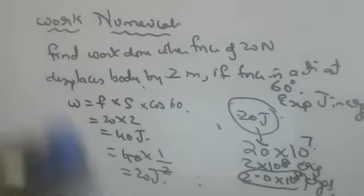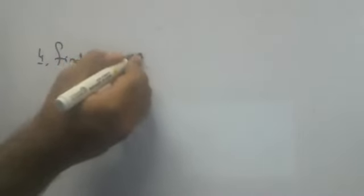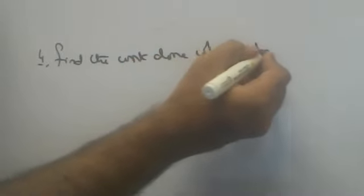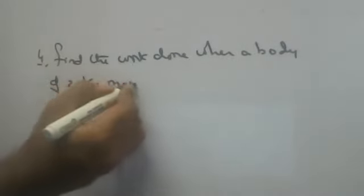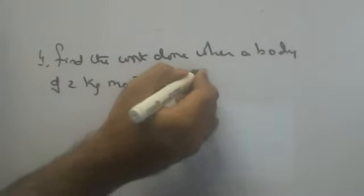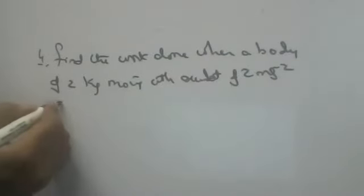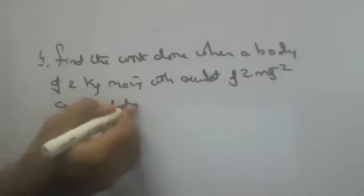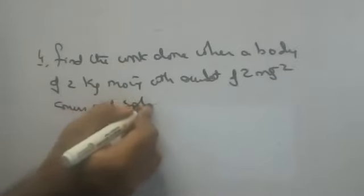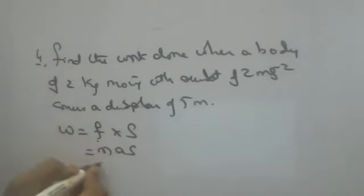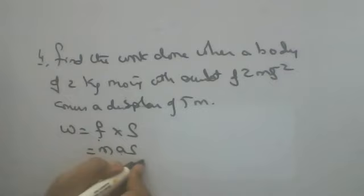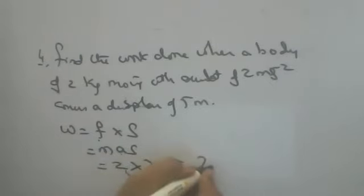Now fourth question: find the work done when a body of 2 kg, moving with an acceleration of 2 m/s², covers a displacement of 5 meters. W = F × S, and F = M × A × S. Mass is 2 kg, acceleration is 2, displacement is 5. 2 × 2 × 5 = 20 joules is the answer.